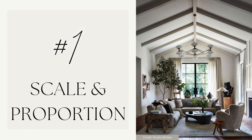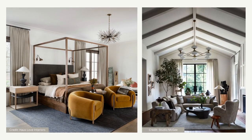Number one: scale and proportion. Scale and proportion is the perfect balance between the room itself — in both width and height — with the furniture and decor pieces that you're putting into the room. You want to take that into consideration, especially when you're looking at purchasing new furniture, as this is going to be crucial in helping you decide the correct size furniture to purchase.